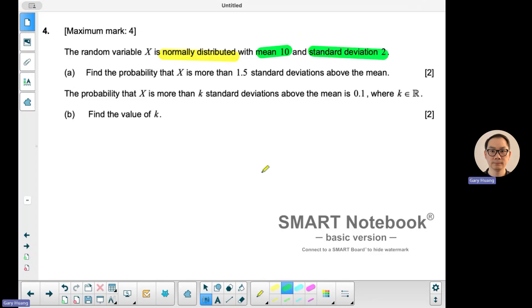But it's actually a trick question because if you see the questions, they ask find the probability of X is more than... Now if they say find the probability that X is more than 15, for example, then you do your normal cdf, you do 15 to positive infinity, 10 and 2, you can come up with the answer.